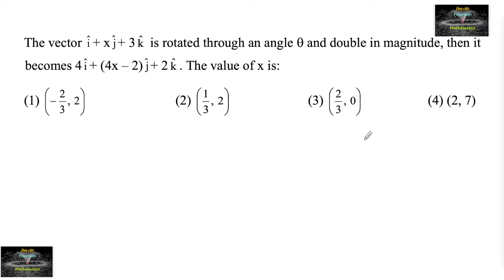The vector i plus xj plus 3k, let's consider this is the vector OA, is rotated through an angle theta and doubled in magnitude. Then it becomes 4i plus 4x minus 2 of j plus 2k.